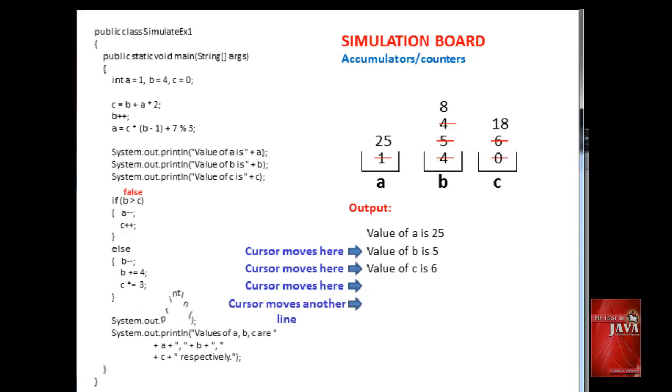After skipping a new line, System.out.println displays the value of a, b, and c with the concatenated literal text. Values of a, b, and c are a couple of commas on the word respectively.